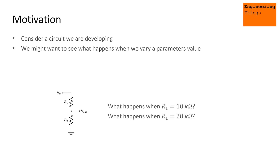For example, if we have a potential divider, we might think to ourselves: what happens when the resistor value is 10 kilo ohms, or perhaps 20 kilo ohms, or perhaps we want to consider it for several tens of values or even more. So if we can automate this process it could be incredibly useful.